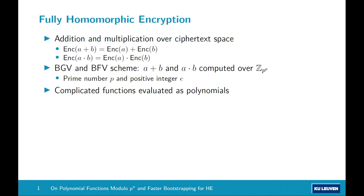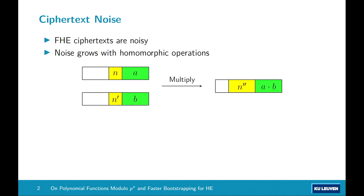Fully homomorphic encryption, as in the previous talk, is a cryptosystem that allows us to compute certain operations over the ciphertext space. Given an encryption of a and b, we can compute an encryption of their sum and product. For the BGV and the BFV schemes considered here, these operations are computed over the integers mod p^e, where p is a prime number and e is a positive integer. More complicated functions are typically evaluated by writing them as a polynomial. All FHE schemes today are based on lattice cryptography, which means ciphertexts are noisy, and this noise grows with homomorphic operations.